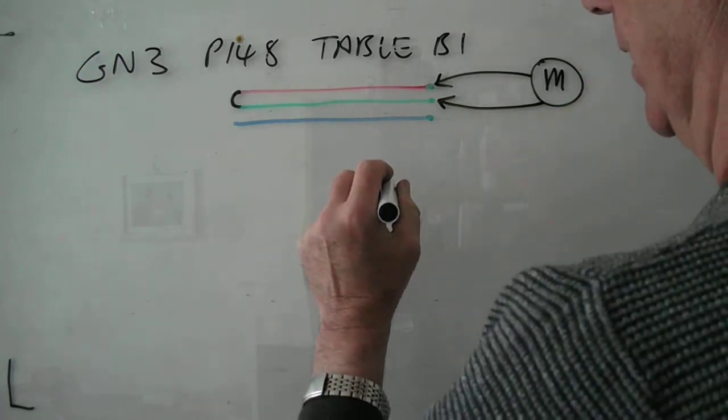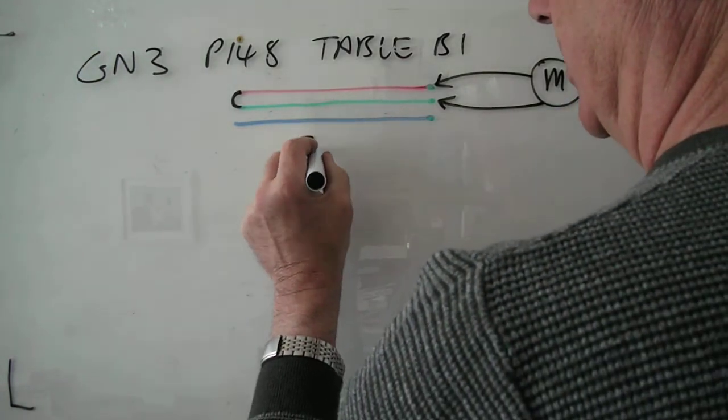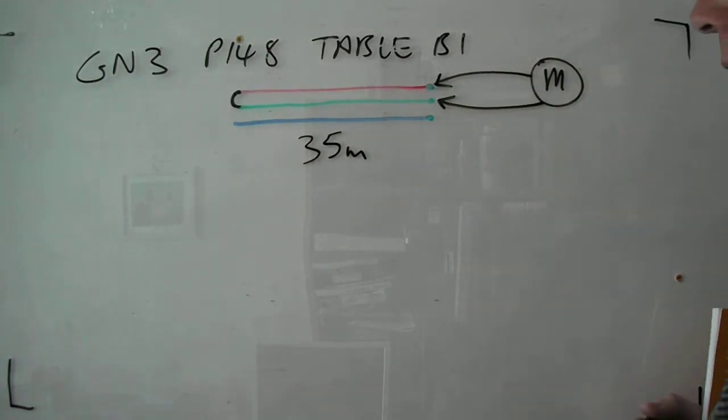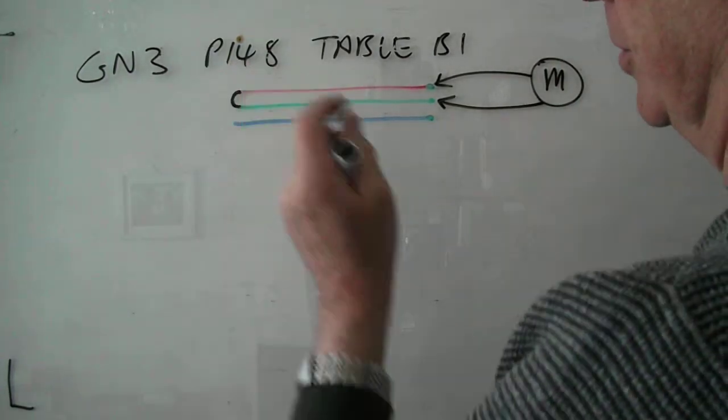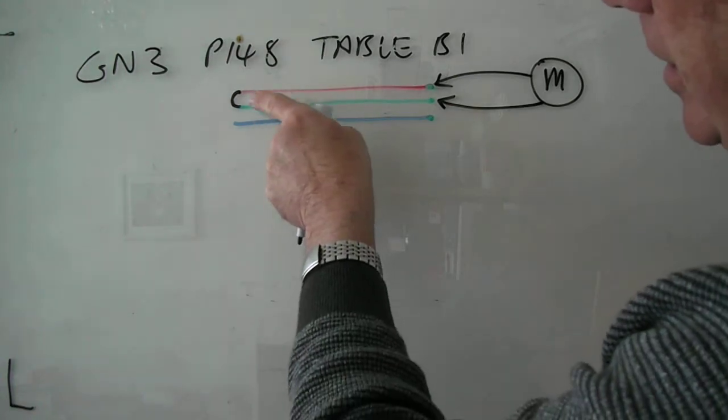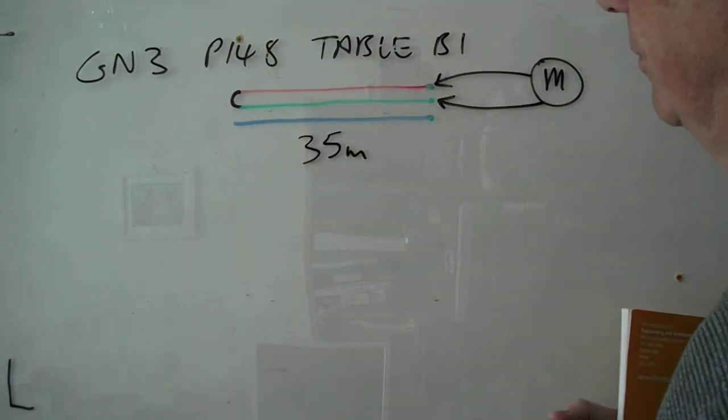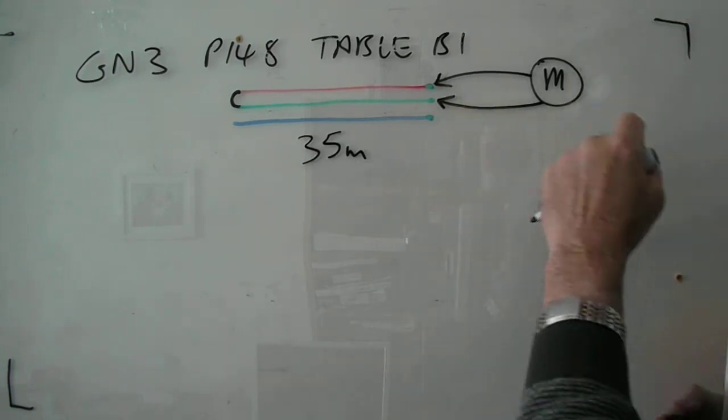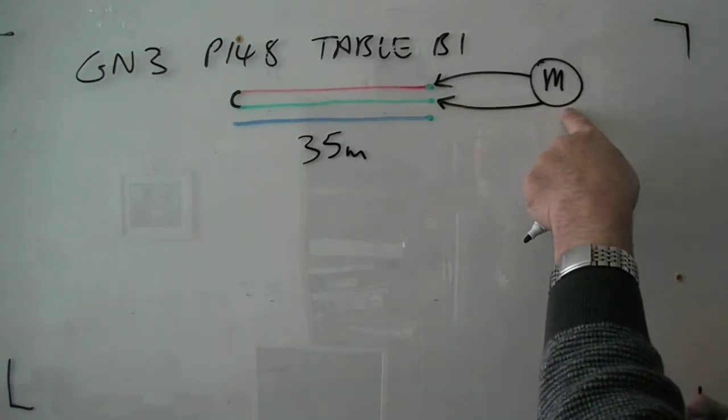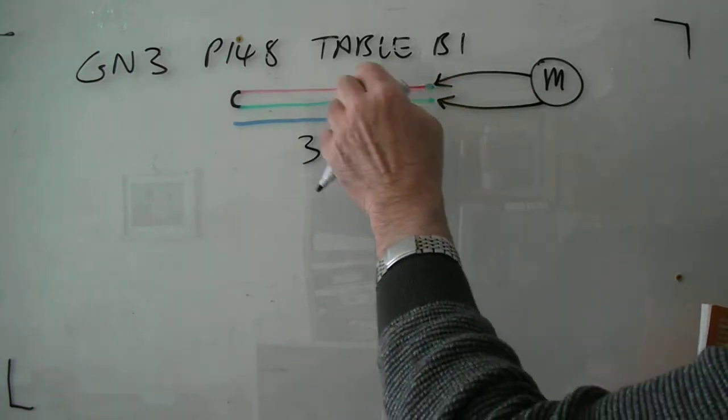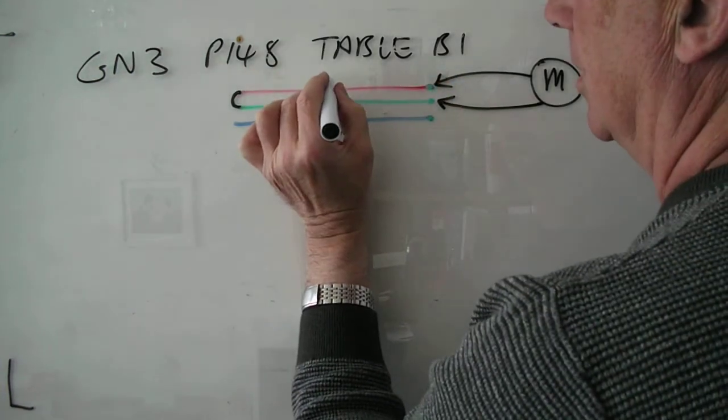Let's say the twin and earth cable is 35 metres long and what you've done is you've shorted out the link between earth and live at the distribution board for that circuit and you go to the other end of the circuit with your mega and you're measuring the resistance between what we call R1.